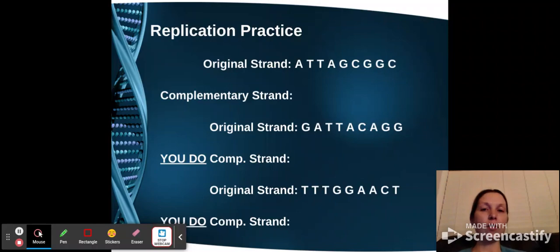Now let's do some replication practice. You actually will need to pause the video in a second and you will do two complementary strands here for practice. So if we look at this for complementary strand, remember A will partner with T, so that's going to be our complement. We have a T next, so that's going to partner with A. Now we've got a G, remember that partners with C. Then we've got a C, so G, C, C. So now I want you to go through and do the next two examples.